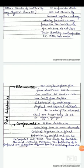First, elements. An element may be defined as the simplest form of a pure substance which can neither be broken into nor built from simpler substances by ordinary physical and chemical methods. The number of the elements which are known today is 118.